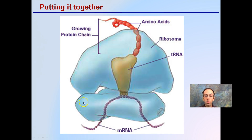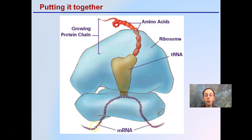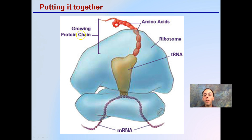Putting it all together: we have our ribosome with a large subunit and small subunit and the little gap between them. The mRNA fits right in there. Encased inside both large and small subunits, we have our tRNA. The tRNA carries an amino acid, and as these come through, we're building the amino acid chain. You can see how these three main types of RNA all come together to produce a chain of amino acids that will ultimately, hopefully, produce a functional protein.